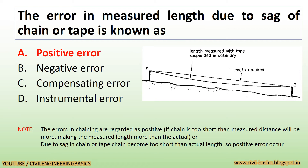Note: errors in chaining are regarded as positive if the chain is too short, making the measured length more than the actual. Also, due to sag in chain or tape, the chain becomes too short than the actual length, so a positive error occurs.